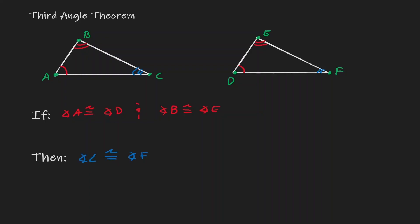In other words, within two triangles, if two corresponding angles are congruent to each other, then the third angle within its own individual triangle should be congruent as well. Let's apply this idea within one example.